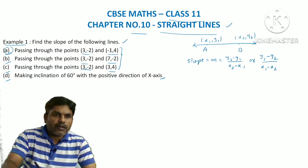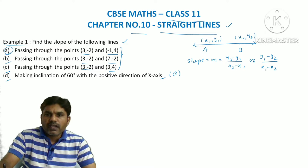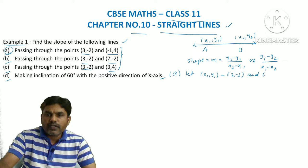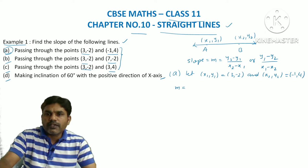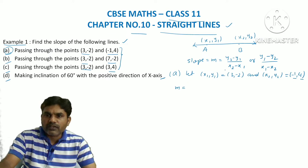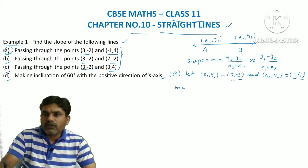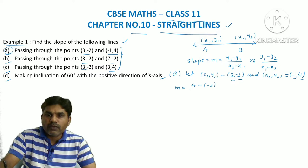Coming to problem (a): the first point, let x1, y1 = (3, -2), and the second point x2, y2 = (-1, 4). After knowing these two points, slope m = (y2 - y1) / (x2 - x1). Here y2 is 4, y1 is -2, x2 is -1, and x1 is 3.